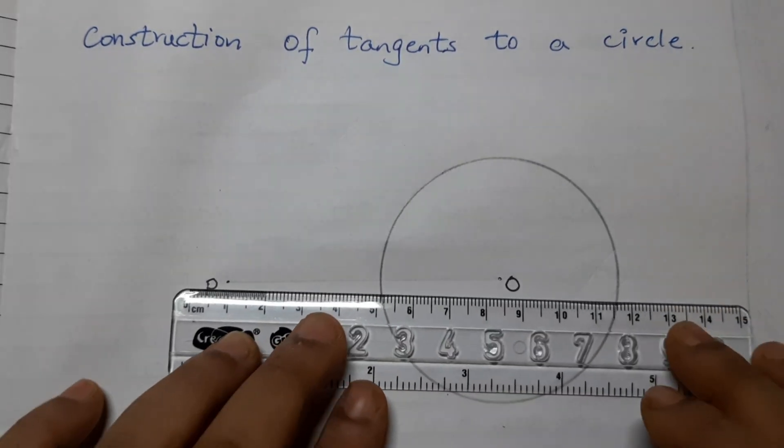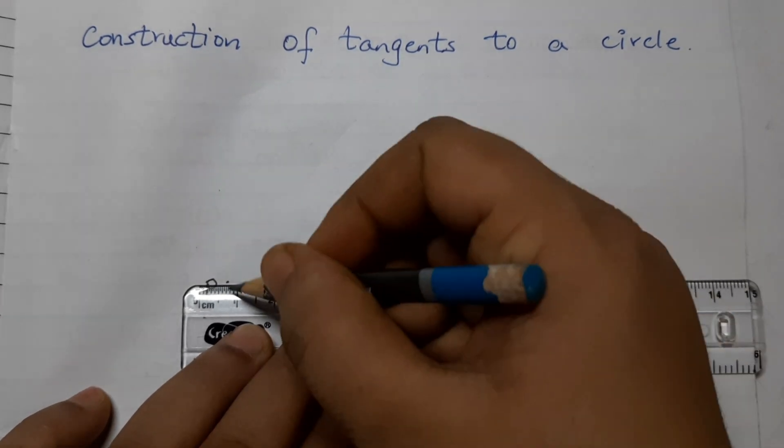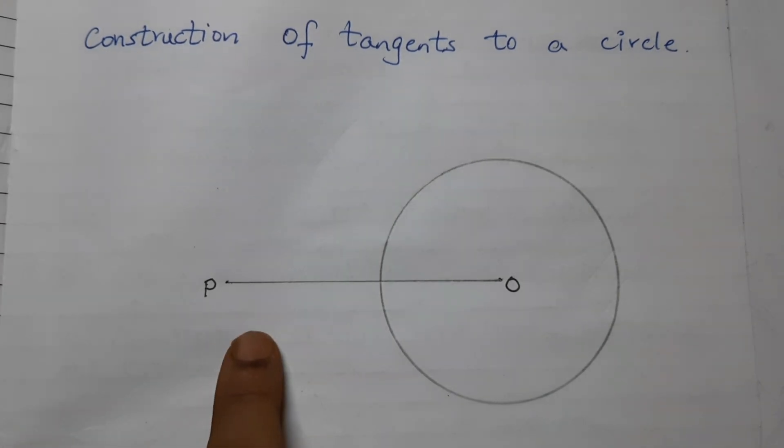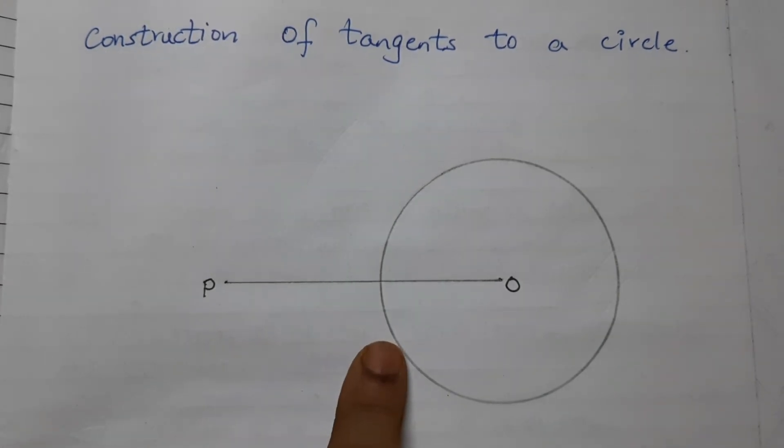The first step is join PO. Then we need to bisect PO, that is we have to draw the perpendicular bisector of PO.